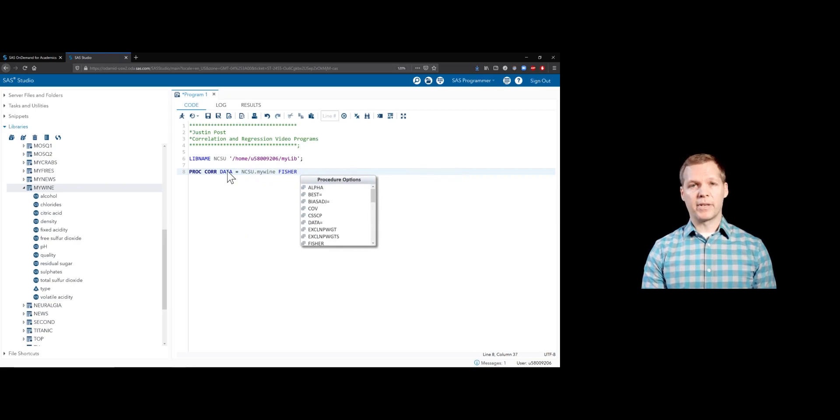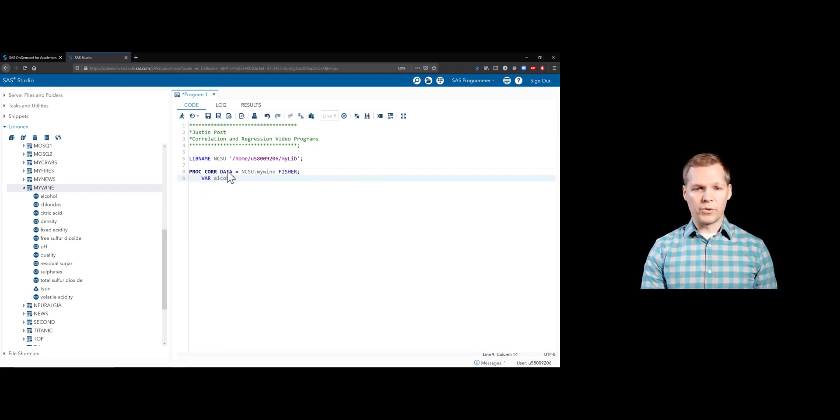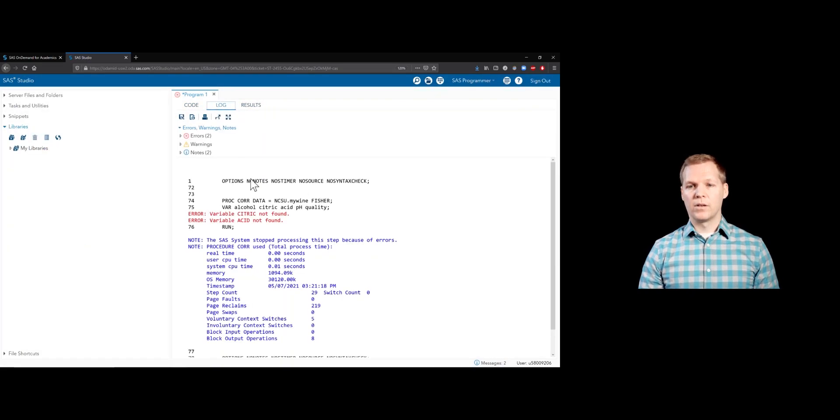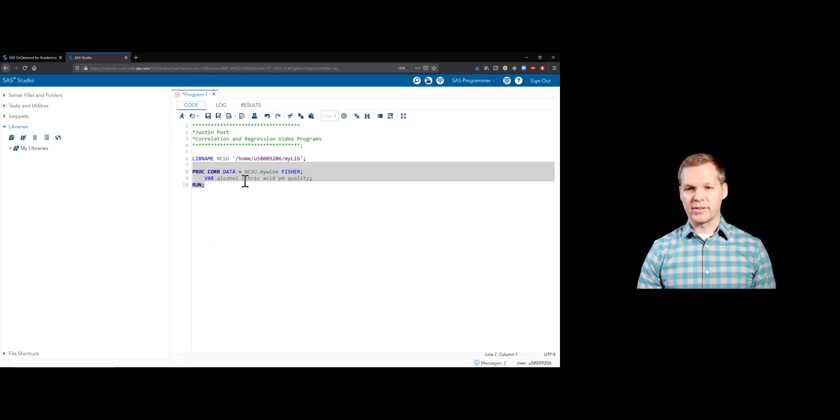I'll just do PROC CORR, give it that data, ncsu.mywine. I'm going to add the Fisher statement so we can get confidence intervals. Then I'm just going to specify which variables I care about. Maybe we'll do alcohol, citric acid, pH, and then quality. Because quality is really usually what we'd consider our response here. Let's just run that little chunk of code. Oh, didn't spell things right, apparently. Oh yes, I have to put this in special quotes.